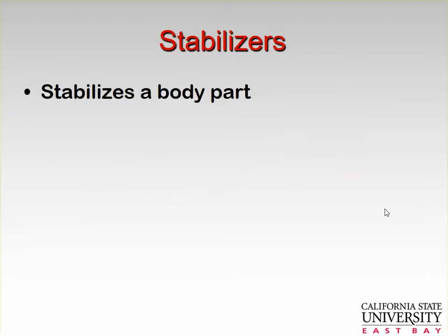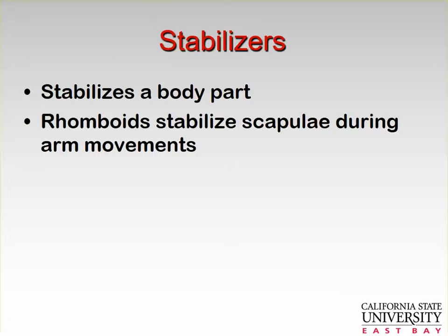Stabilizers stabilize a body part. Your rotator cuff are huge stabilizers, keeping the humeral head in the glenoid fossa. Rhomboids stabilize the scapula during arm movements. All your six scapular muscles keep that scapula on your thorax while your glenohumeral joint is moving through great ranges of motion.